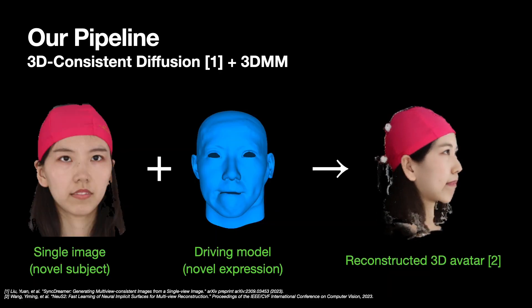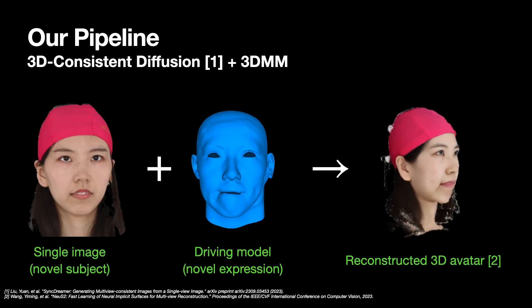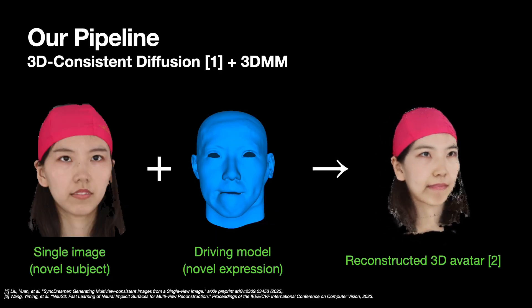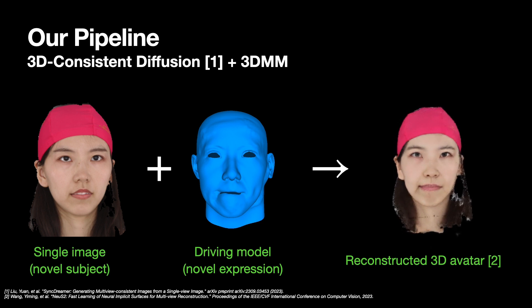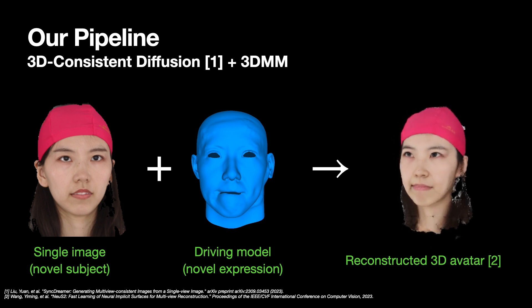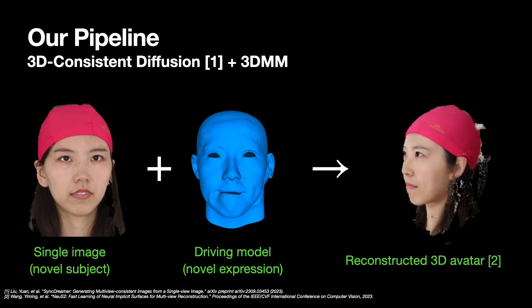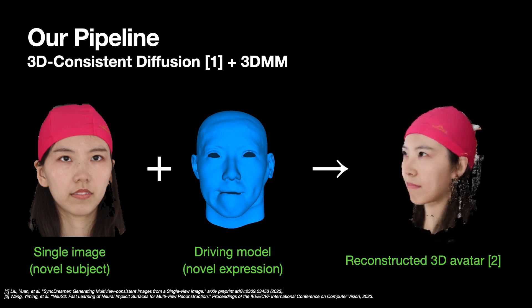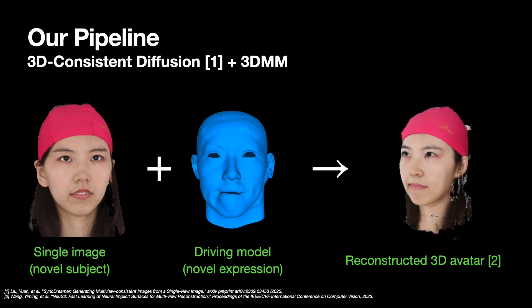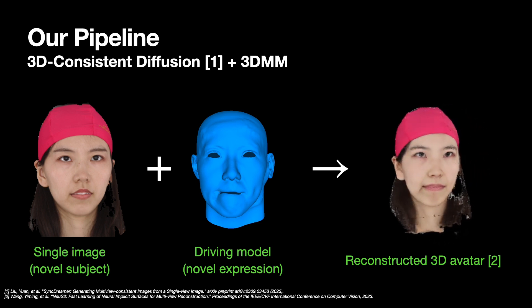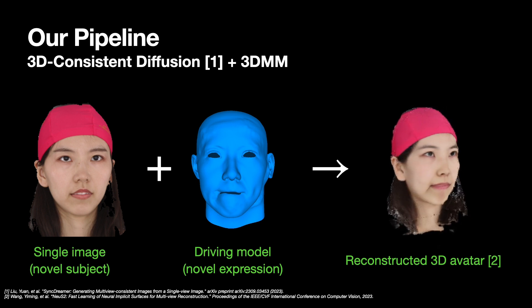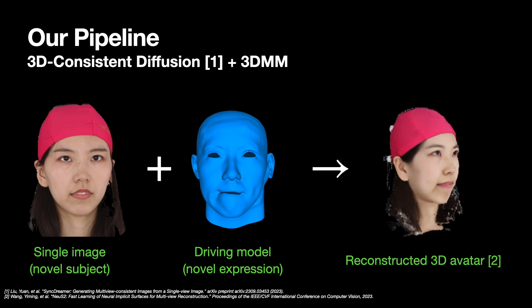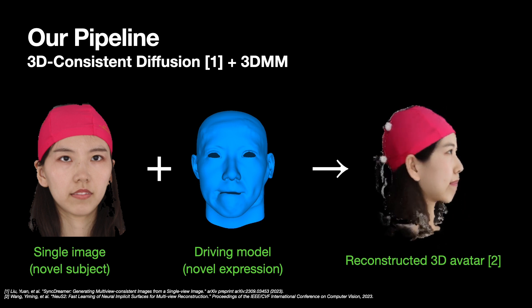Given a single input image and a Morphable Mesh with a desired facial expression, our method directly generates 3D consistent and photorealistic images from novel viewpoints. Using these generated images, we could reconstruct a coarse 3D model using off-the-shelf neural surface reconstruction methods, such as NeuS2.